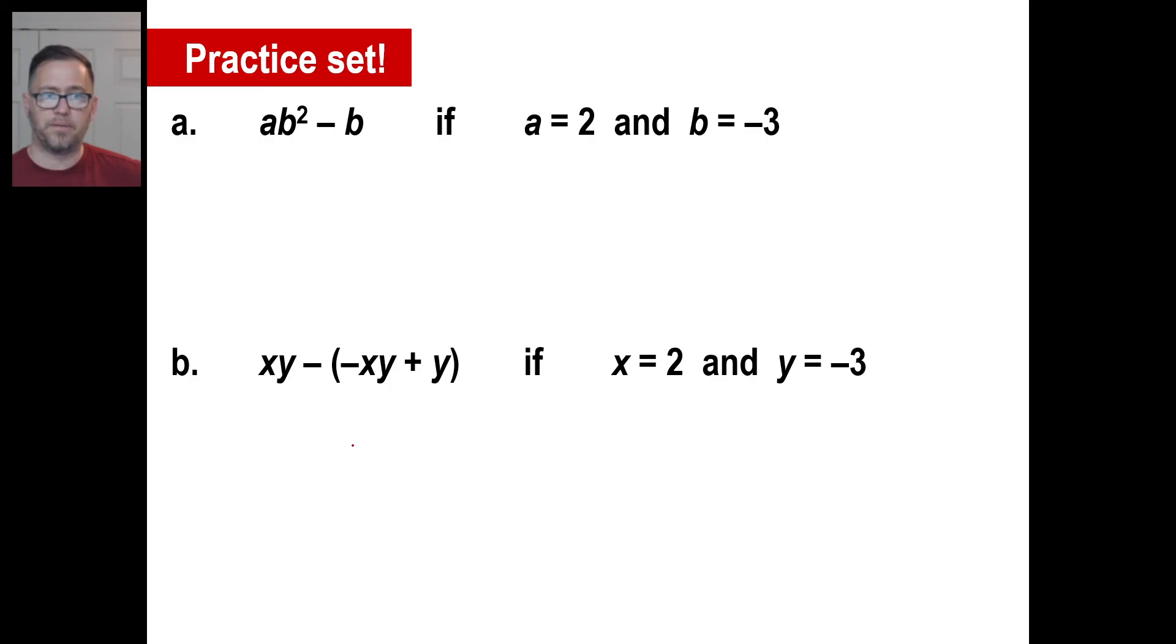Go ahead and pause it and try practice problem a, and then unpause it when you're finished. Let me get to an exciting new color here. ab² - b, a is 2, and b is negative 3. So let's just, a is 2, b² means the actual number negative 3 squared, and the opposite of b means the opposite of negative 3, which is positive 3. Let's do the negative 3 squared first. Negative 3 times negative 3 is 9. 2 times 9 is 18, plus 3, and the answer is 21. There we go.